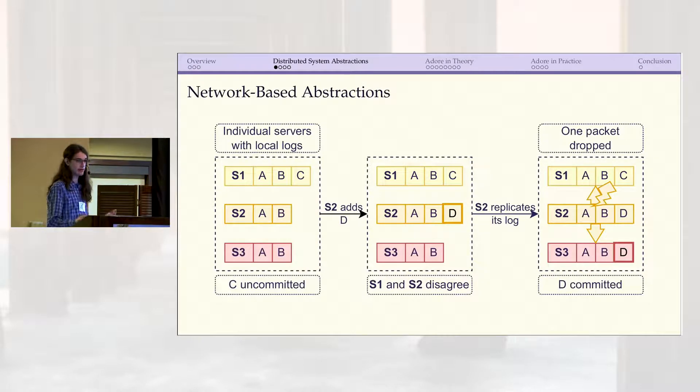Before I discuss why I think Adore is the right abstraction for consensus, I'll briefly consider some alternative abstractions. Network-based abstractions model the system as a set of servers communicating over unreliable channels. For example, you might have a case like this where S1 and S2 temporarily disagree about their last log entry, and then even after S2 manages to replicate its entry to S3, S1 still sees a different entry because of network failures. This is very similar to how real systems behave, so the advantage is it gives us confidence that anything we prove about this model is probably true of the implementation as well. But it means that we inherit a lot of complexities that come from implementation details that are mostly independent of the actual core safety that we're trying to prove.